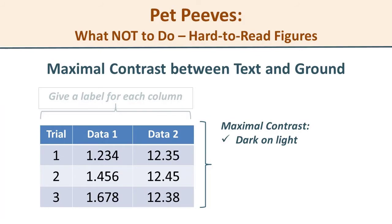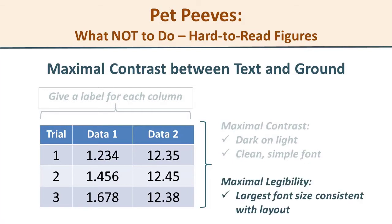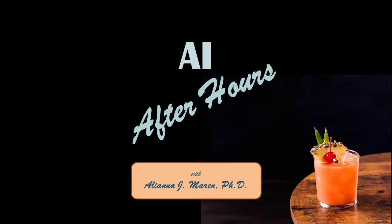This is extra effort but well worth the time. Shoot for maximal contrast in your text versus the background. It is easier to read black on a light background than white on dark. If you have control over the colors at all, shoot for a very light background — even if your text is in colored boxes. Light background, black text. Go for bold, simple fonts that are easy to read, and expand the font size as much as you can without overflowing the boxes you're working with.